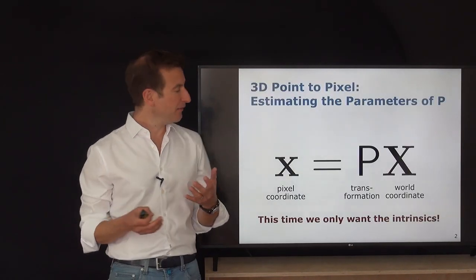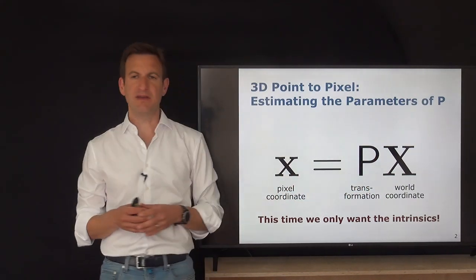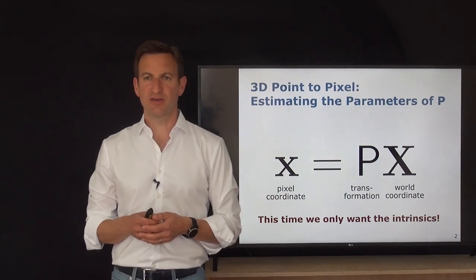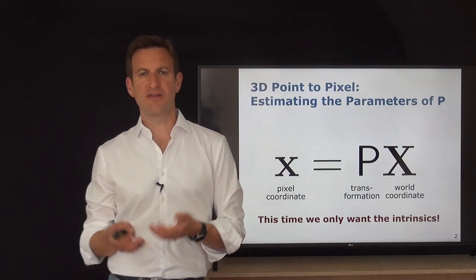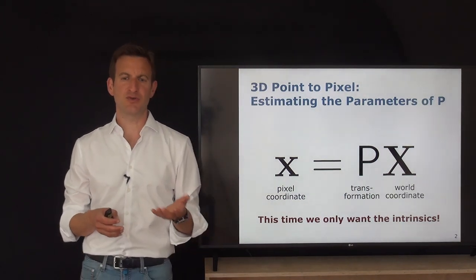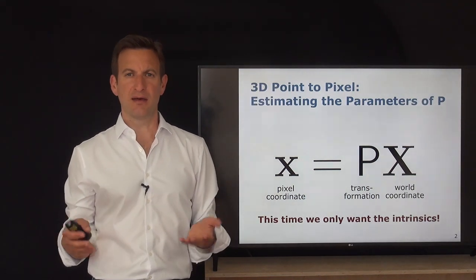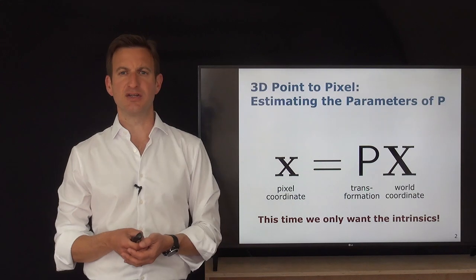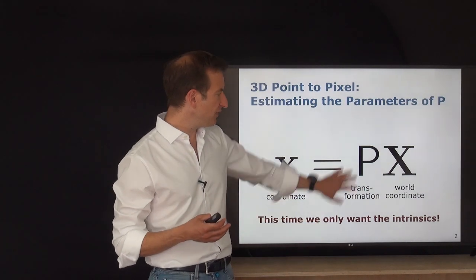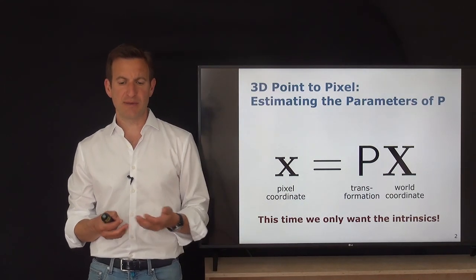If we look at the overall concept, we have a mapping from world coordinates to pixel coordinates involving the projection matrix P. The projection matrix P contains the intrinsic parameters and the extrinsic parameters — that means the calibration parameters, which are the intrinsics, and the extrinsic parameters, which is the pose consisting of the position and orientation of a camera. We are today only interested in the intrinsics, so we don't care where the camera is.